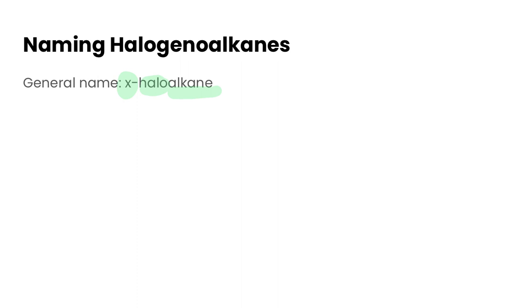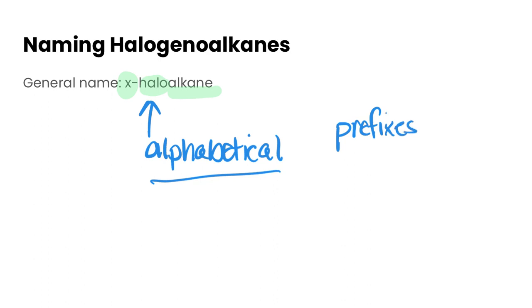Now a couple things to keep in mind: all of these things that are attached get put into alphabetical order. You have to keep all of the different substituents attached because if there's more than one, you want to use prefixes like di, tri, tetra, that sort of thing.